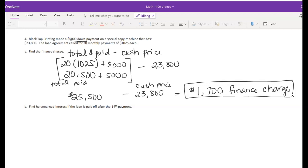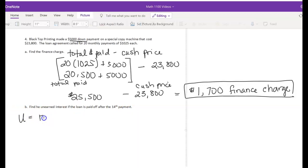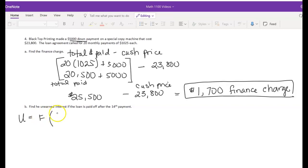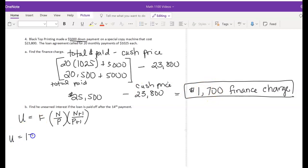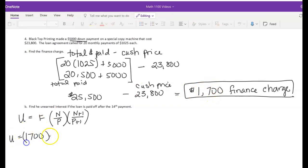Okay, let's find the unearned interest if the loan is paying off after the 14th payment. Let's write down that formula again. Again, U equals F for the finance charge. Okay, then it was N over P, and N plus 1 over P plus 1. Or you could have said that 1 plus N over 1 plus P. Okay, so we found the finance charge. That was part A. Let's put that as part of our formula, $1,700 for our finance charge.